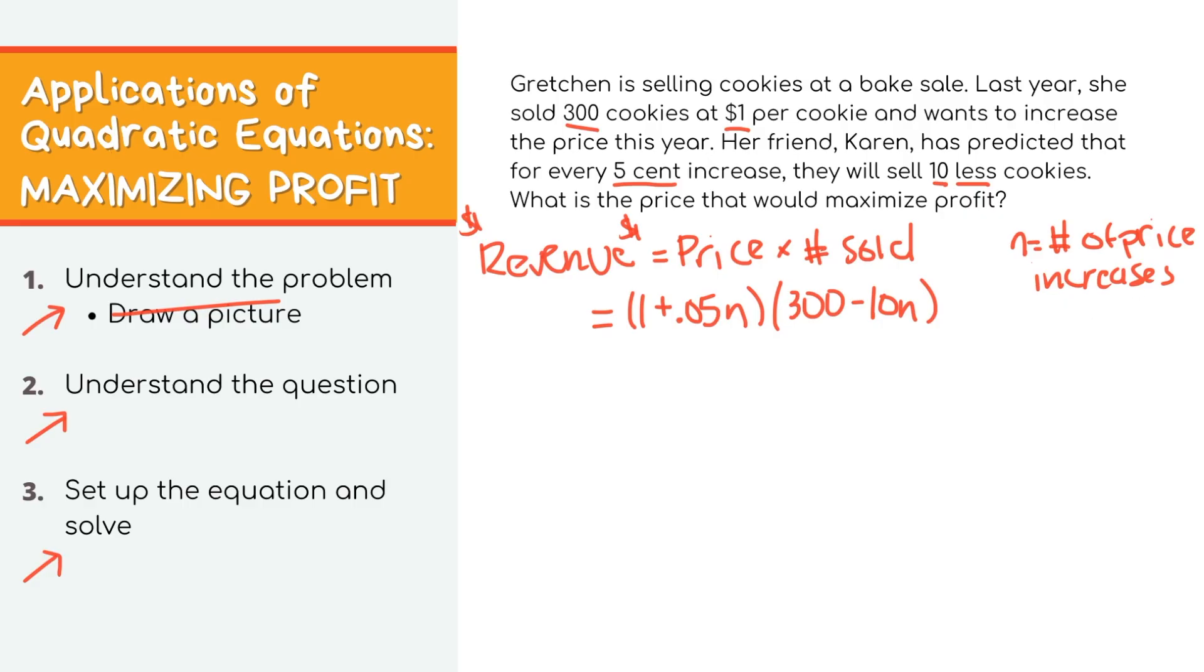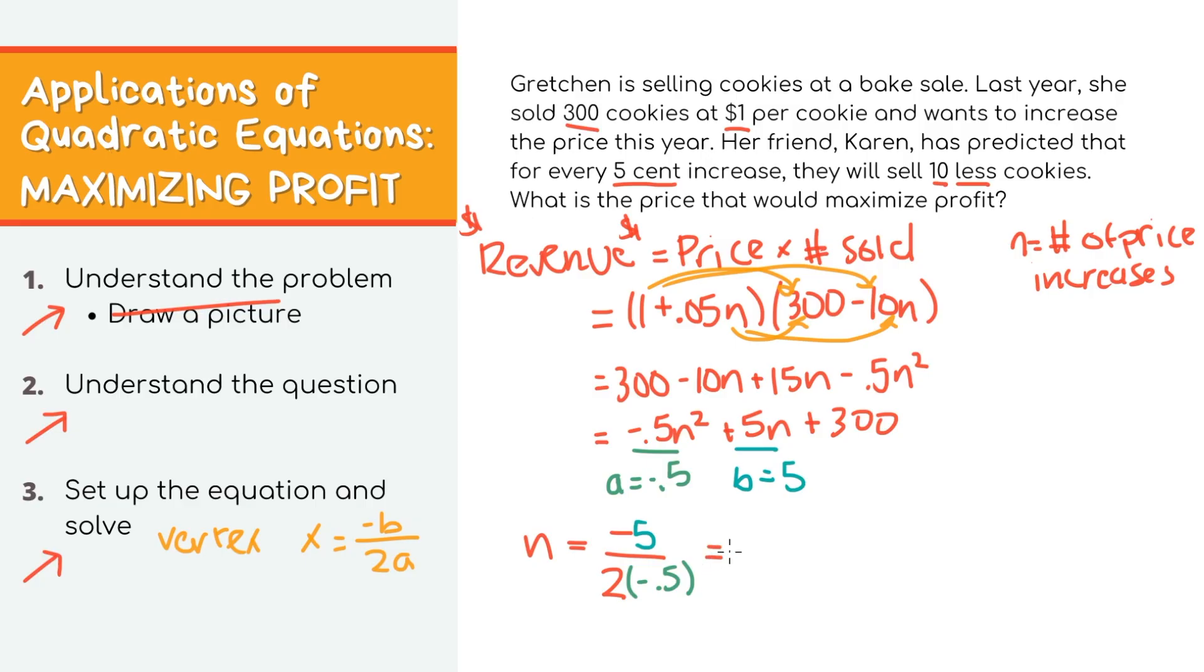This is our equation, which I'm just going to distribute and put it in standard form. Now, this is another maximizing question, so we need to find the vertex of this equation like we did in the last example. Let's plug in our a and b values into the vertex formula. Simplifying, we'll get n equals 5, which means that we should increase the price by 5 increments. 5 times 5 cents, which equals 25 cents. So it's basically saying that we should increase our price by 25 cents, which leaves us with a total of $1.25 per cookie, which is our final price to maximize profit.